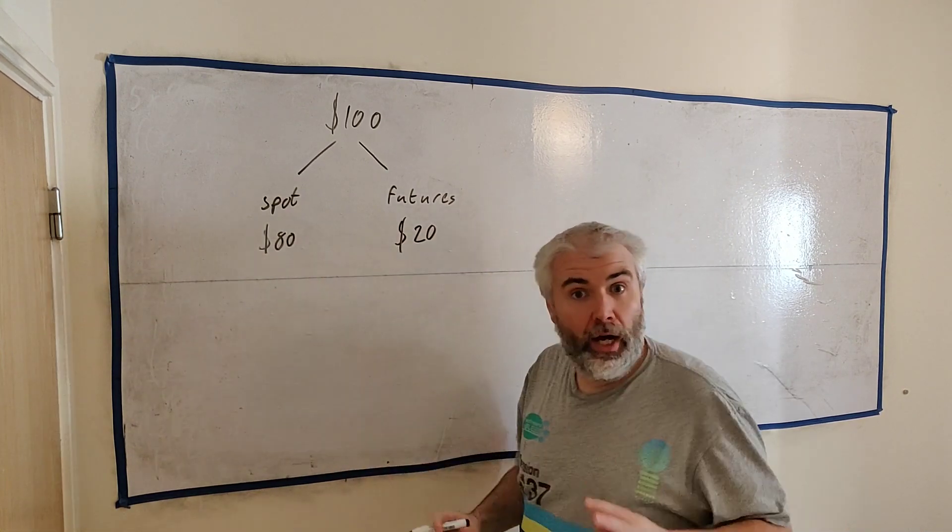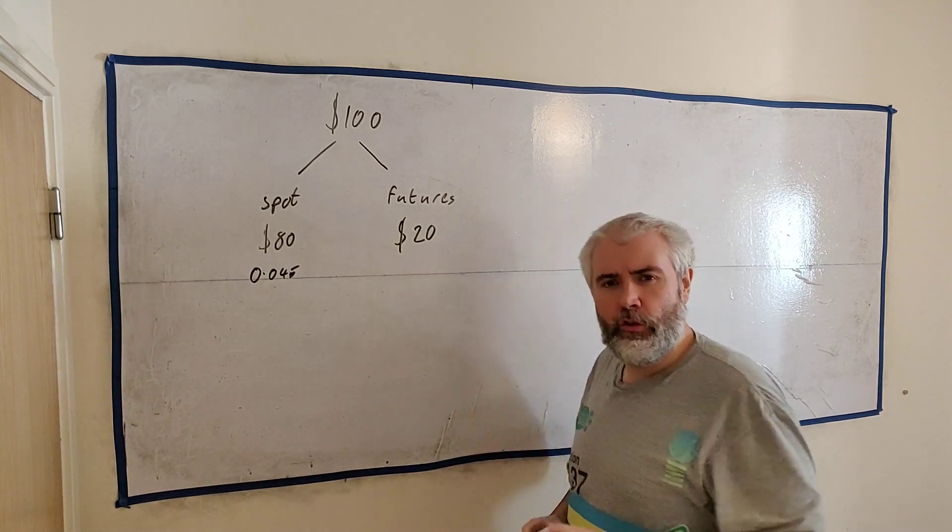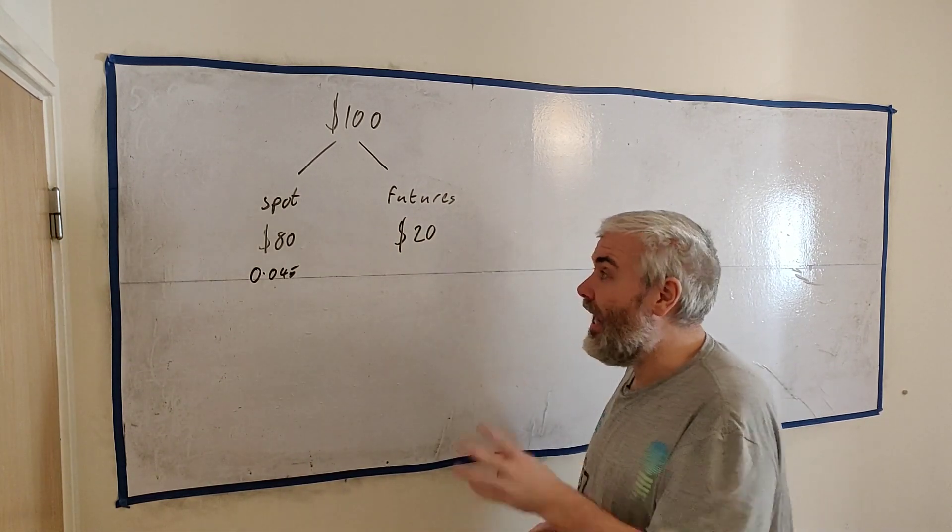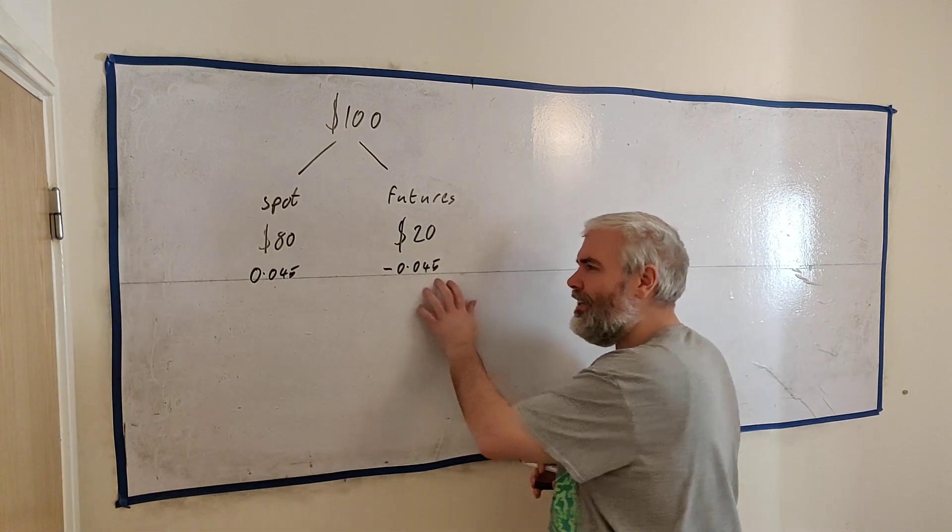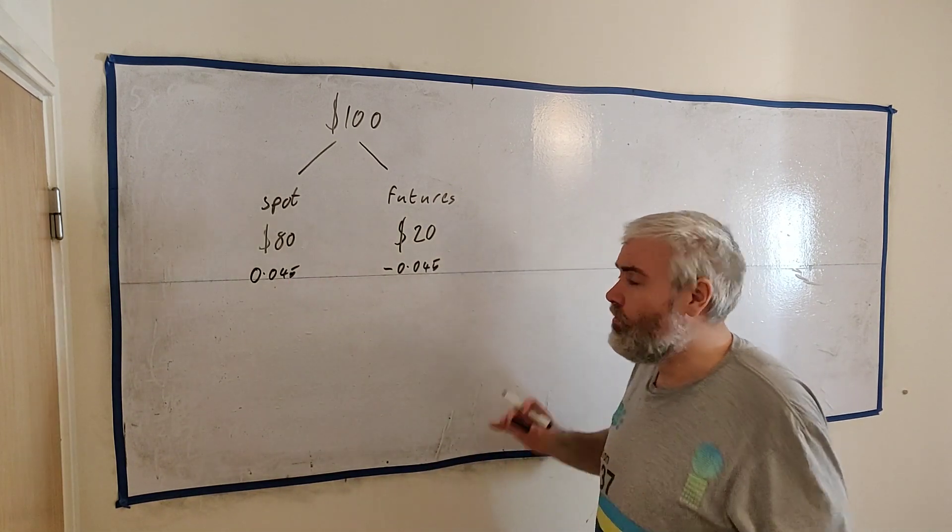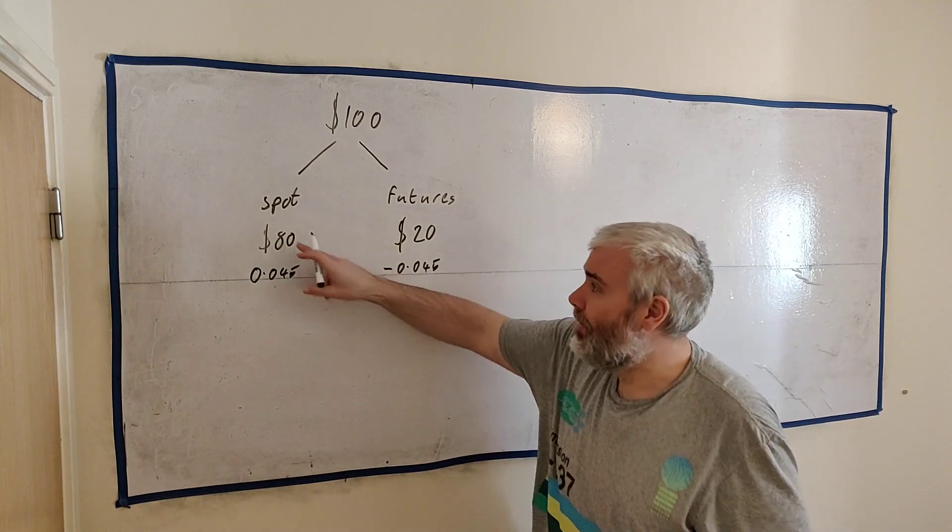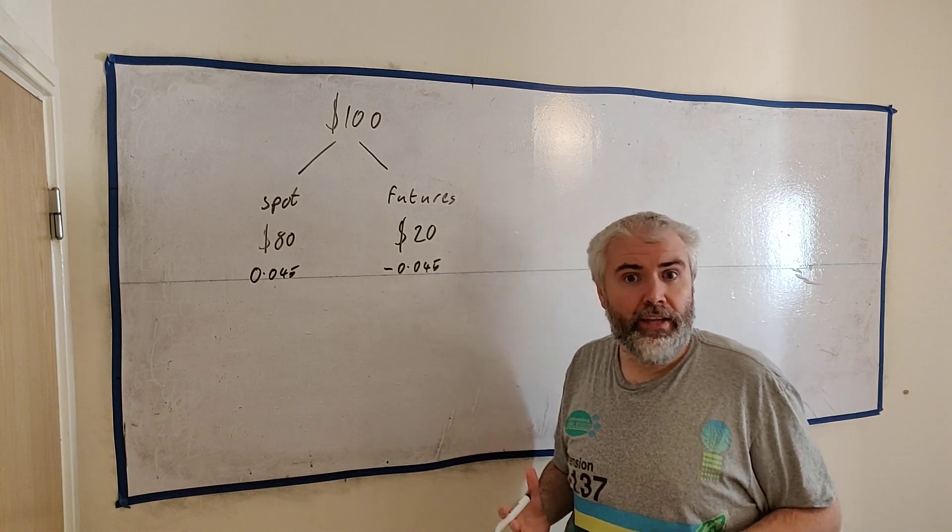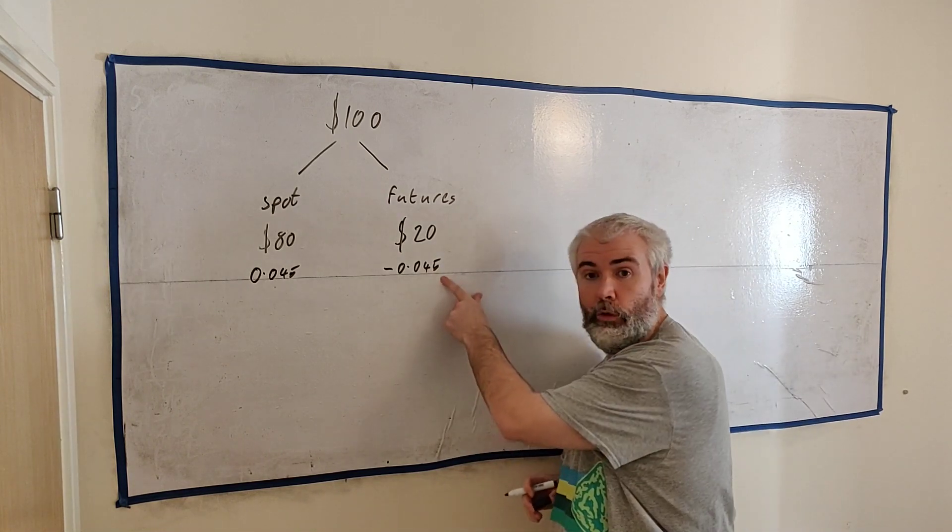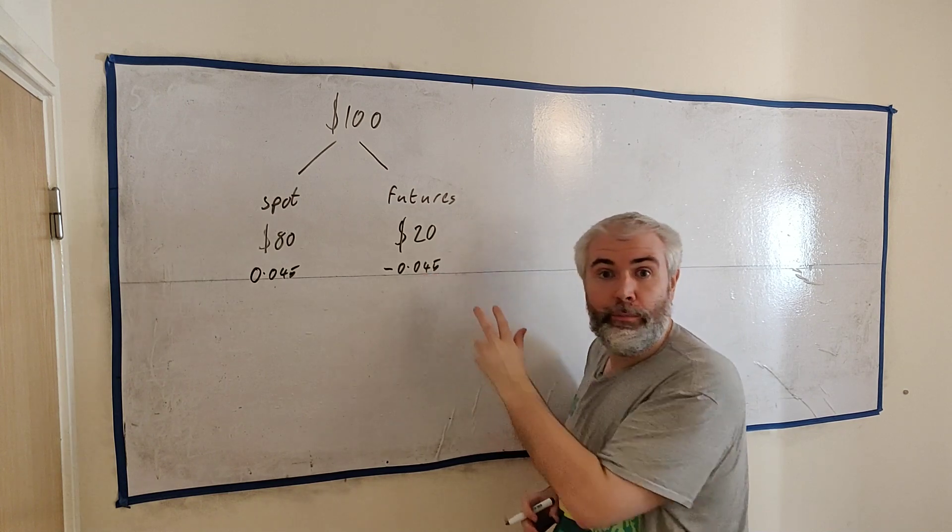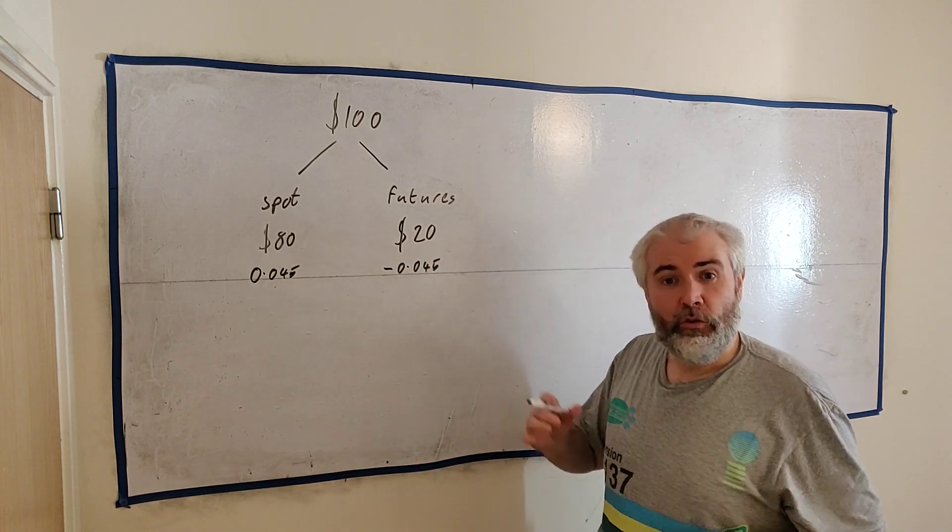I'm going to run this through an example here. We're going to take a hundred dollars starting money as an example and we're going to be putting eighty dollars of that into a spot account and the other twenty dollars into a futures account. Now with this eighty dollars we're going to buy some Ethereum. That works out to be about 0.045 Ethereum. With the twenty dollars in the futures account we're going to use leverage and we're going to make an eighty dollar bet, a minus eighty dollar bet. We're going to sell 0.045 Ethereum. This will leave us perfectly balanced in Ethereum. So every eight hours you would make money.